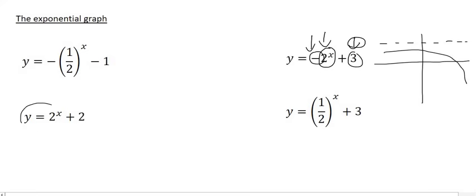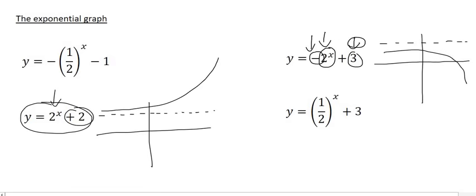So looking at this one over here which is y equals 2 to the power of x plus 2, that's quite an easy one. That is a graph that has moved two units up so we can put the dotted line, and then this 2 over here is bigger than one and so it's a graph that increases like that.